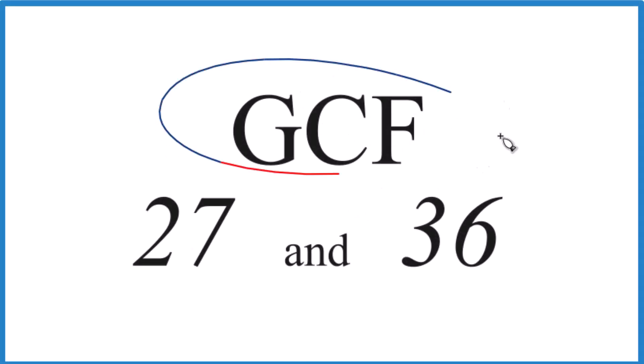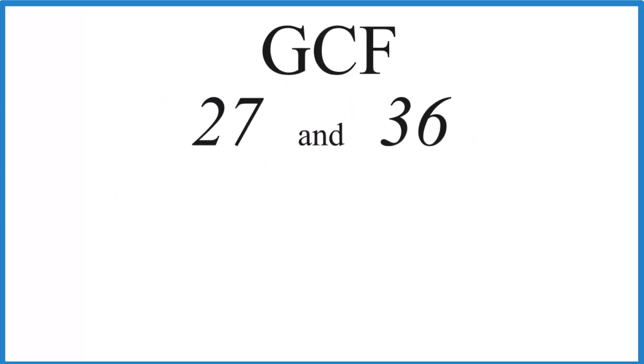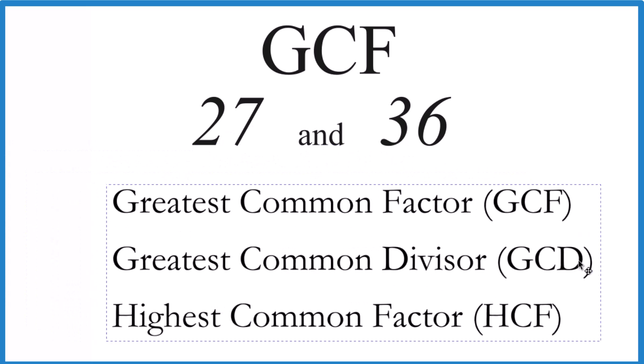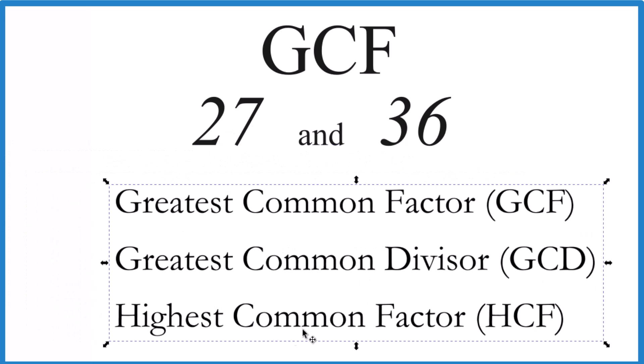To find the greatest common factor for 27 and 36, here's how you do it. First off, the greatest common factor—sometimes it's called the greatest common divisor or the highest common factor.